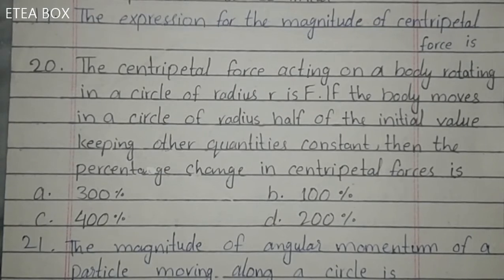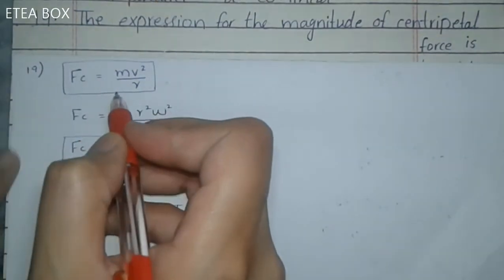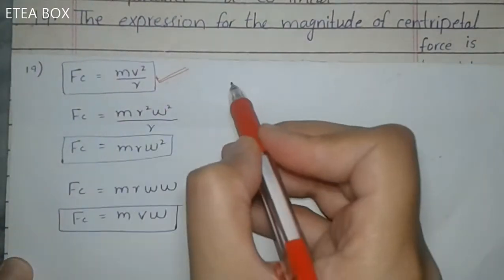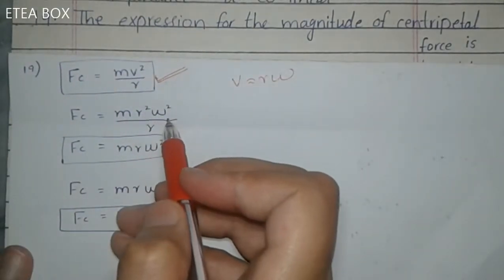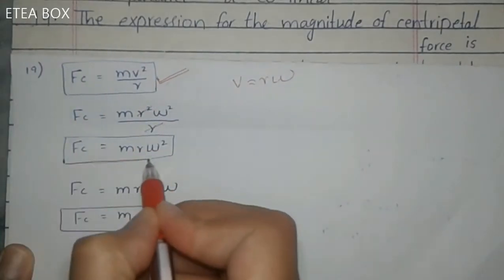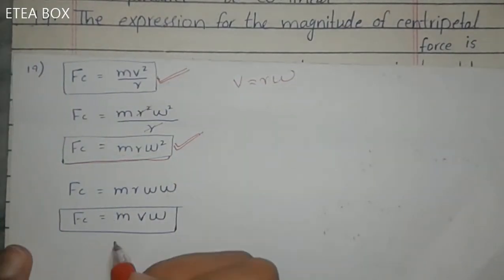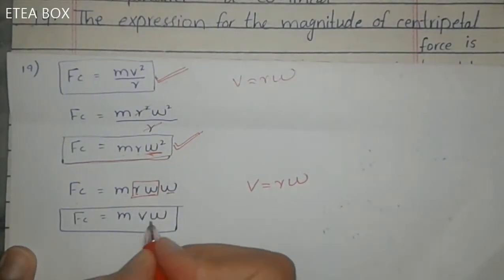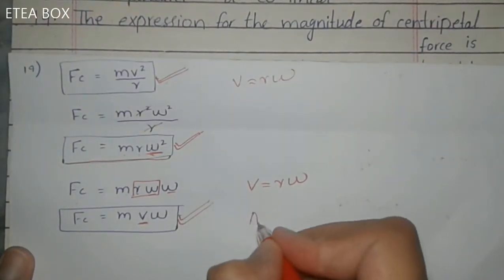MCQ 19: The expression for the magnitude of centripetal force. We know Fc = mv²/r (option A, correct). Substituting v = rω gives Fc = mrω² (option B, also correct). Splitting mrω² and replacing rω with v gives Fc = mvω (option C, also correct). So all options are correct.